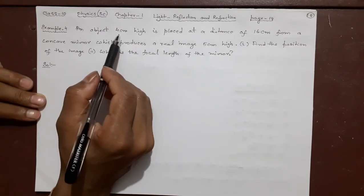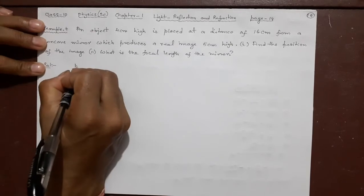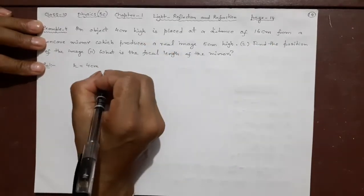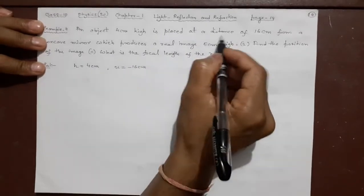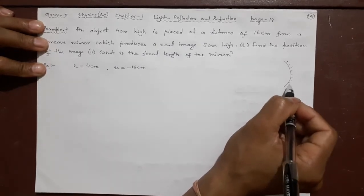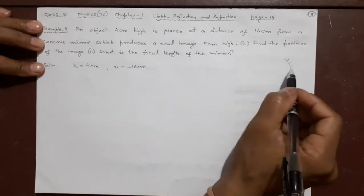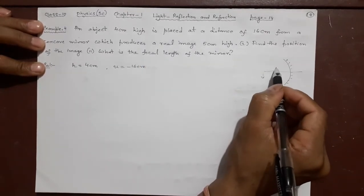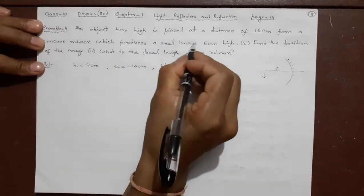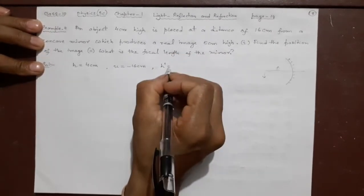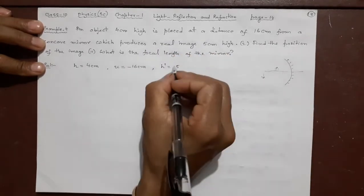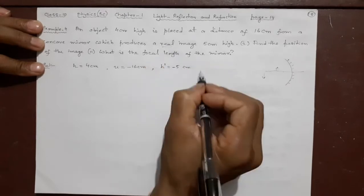Fourth numerical is like this. An object 4 centimeter high, means the object's height is 4 centimeter, H is equal to 4 centimeter. Remember image is H dash. It's placed at a distance, placed means you are keeping it there. That means U is equal to minus 16 centimeter. Placed at a distance of 16 centimeter from a concave mirror. Concave means this type of mirror. Just roughly I'll just visualize which produces a real image. That means when you get the image it will be like this. Object will be here, image will be, it may be here also, just inverted. Real image 5 centimeter high. That means H dash, 5 centimeter high means its image 5 centimeter. H dash is 5 centimeter. And that too in the reverse direction. Real means inverted. Inverted means minus.